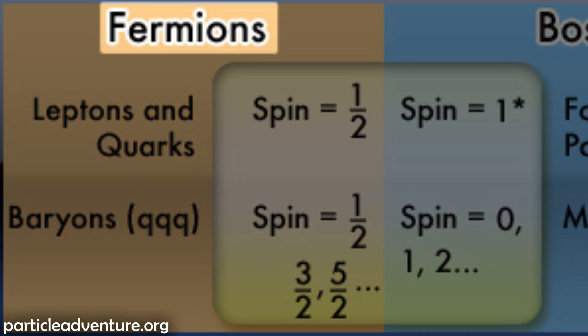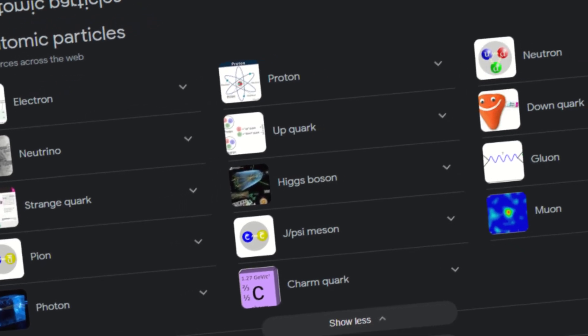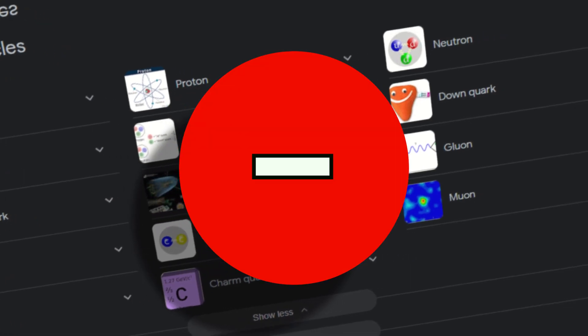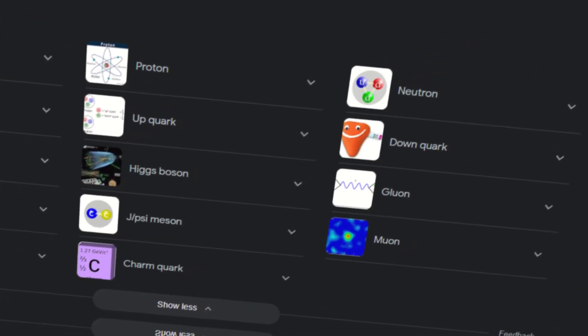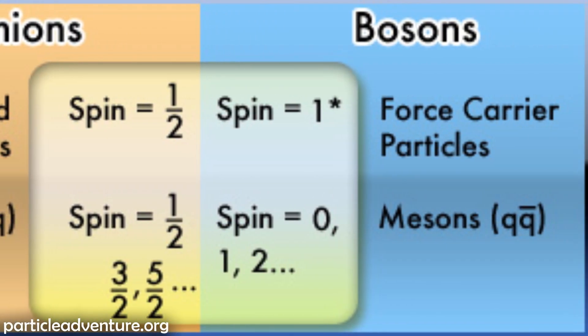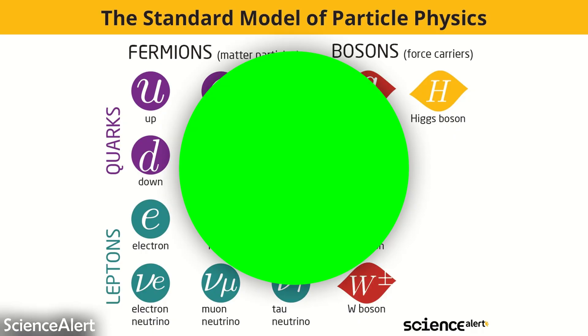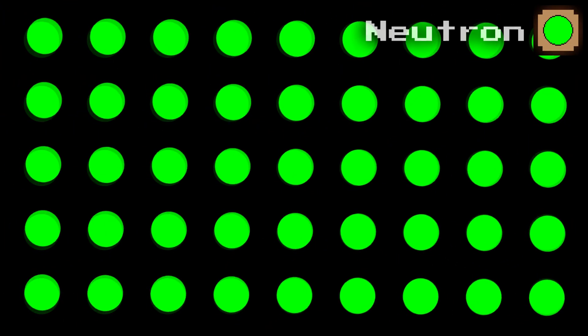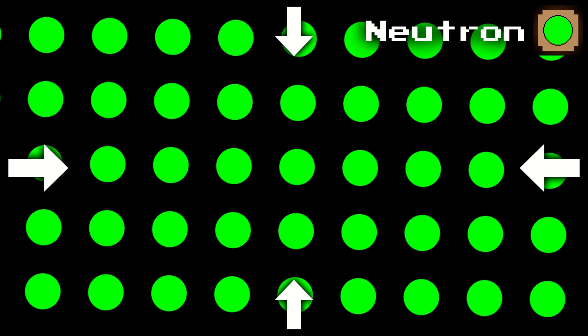Fermions are a category of subatomic particles that include protons, neutrons, and electrons. The other category is bosons, but you don't need to worry about that. Basically, Pauli says two fermions, neutrons in this case, don't want to be in the same spot at the same time. So trying to squish two neutrons together is almost impossible.